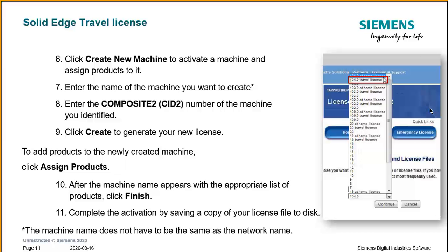Next, create a new machine to activate it and assign products to that machine. Enter a name for the machine — it doesn't have to match the network name. Enter the Composite CID number of the machine you identified, then click Create to generate your new license. To add products to the newly created machine, click Assign Products, and after the machine name appears with the appropriate list, click Finish. Finally, save the newly generated license to your hard drive — you can save it on the desktop or in any directory you can make note of.